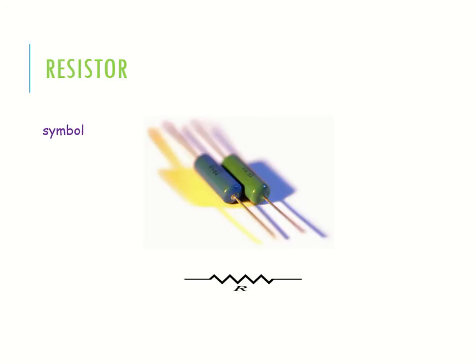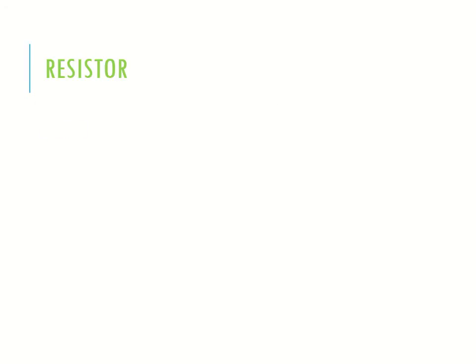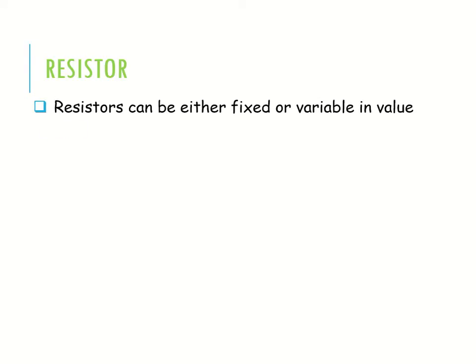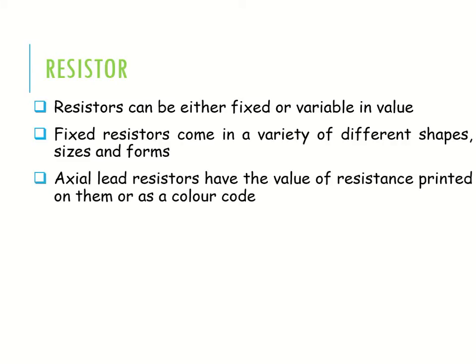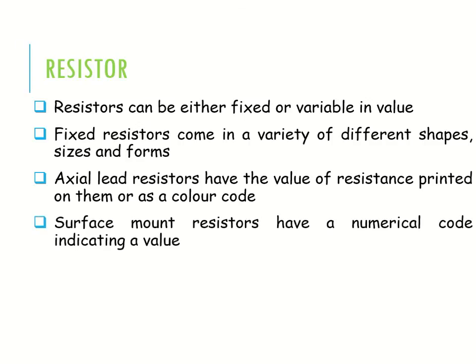This is the symbol of a resistor. A resistor can be either fixed or variable in value. Fixed resistors come in a variety of different shapes, sizes, and forms. Axial lead resistors have the value of resistance printed on them or as a color code. Surface mount resistors have a numerical code indicating the value, or resistors have a tolerance value.